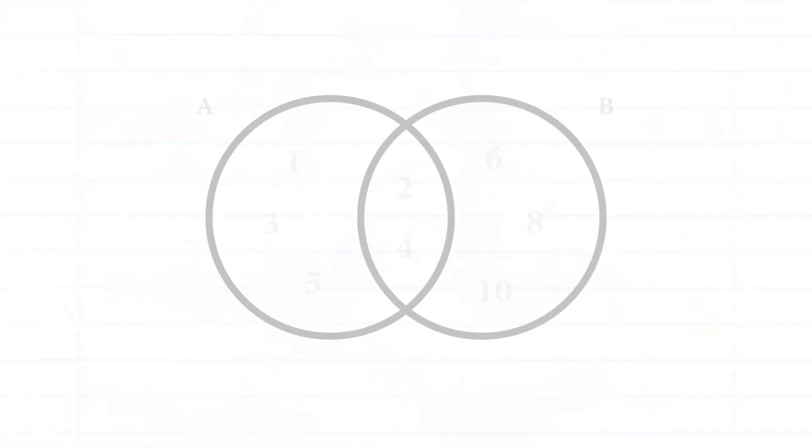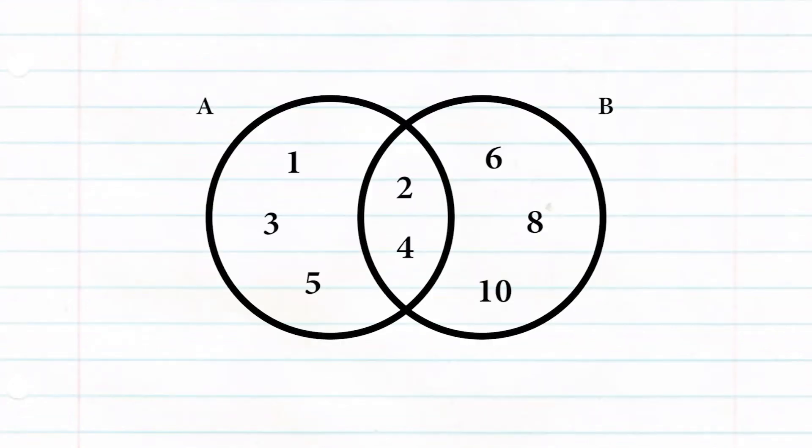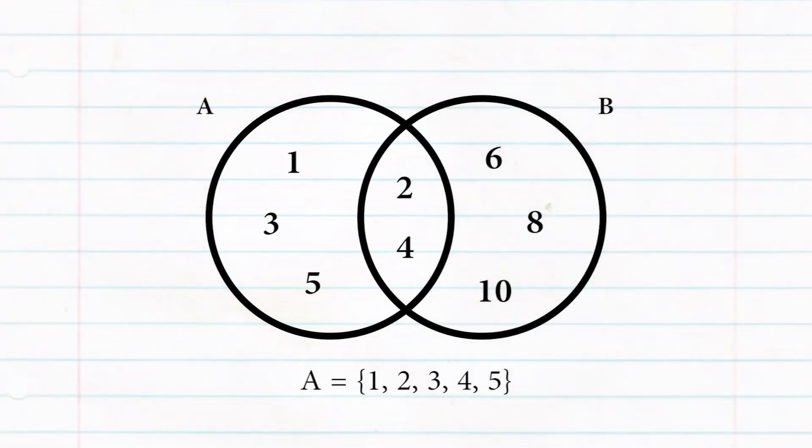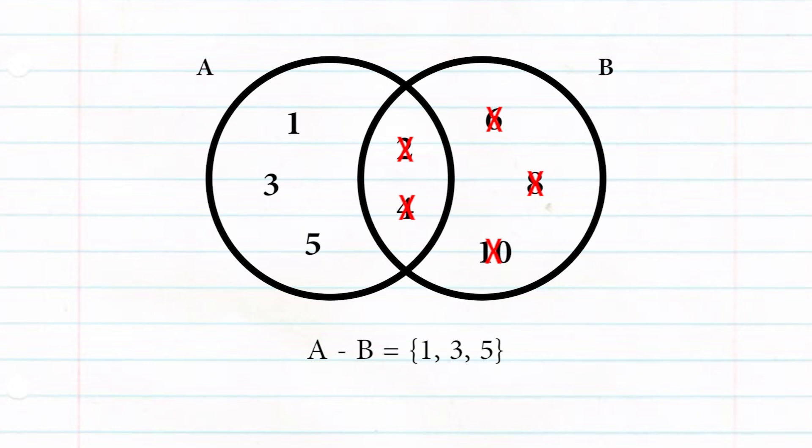Let's take a look at this Venn diagram of sets A and B. These are the elements in set A. Now, let's remove those from set B along with our common elements. With that said, we only have three elements remaining: one, three, and five. Like subtraction, this operation uses the minus sign.